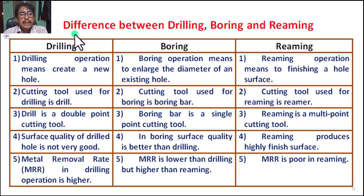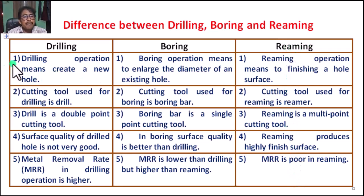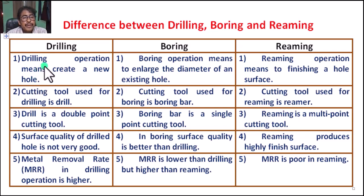Students, today we are going to learn what is the difference between drilling, boring, and reaming. This column is drilling, this column is boring, and this column is reaming. Number one, drilling operation means to create a new hole. Drilling is to generate a hole — it is the first stage of operation. Here, the hole is of circular cross section in solid material.